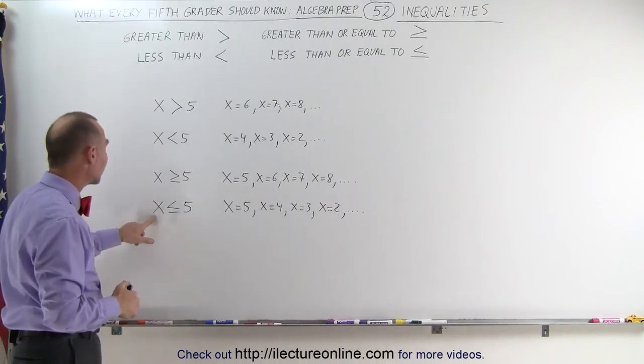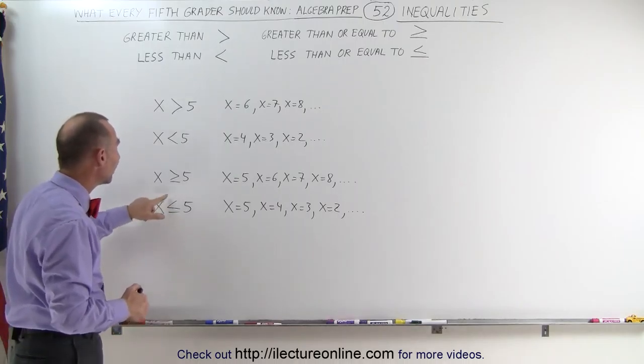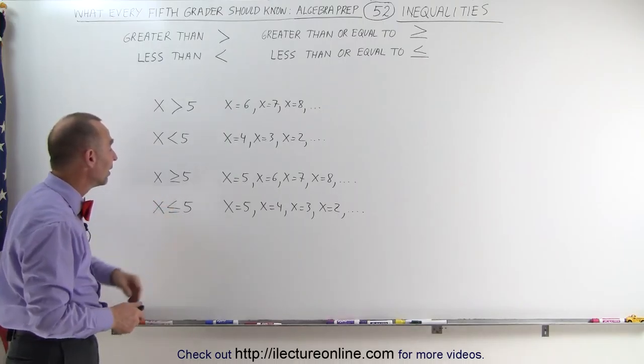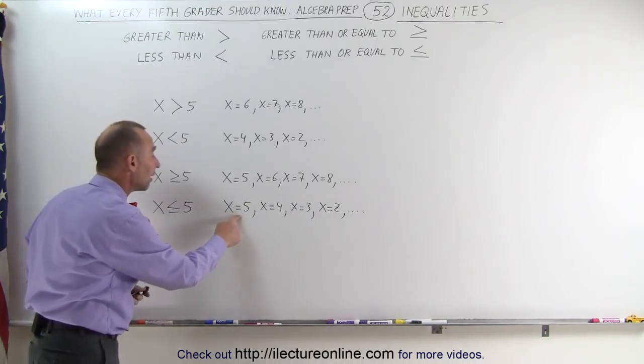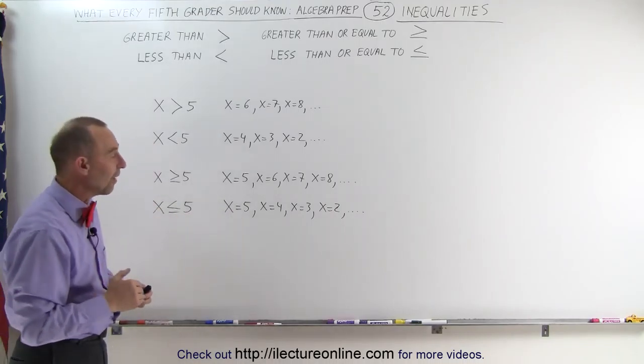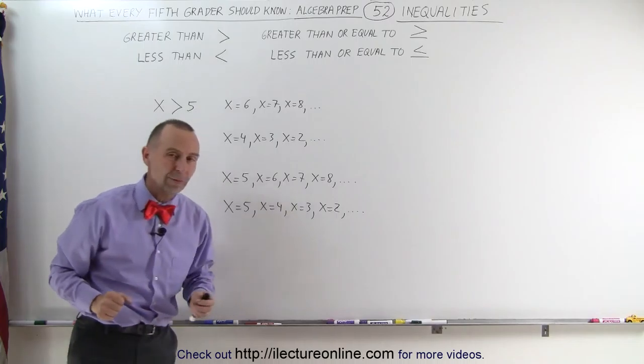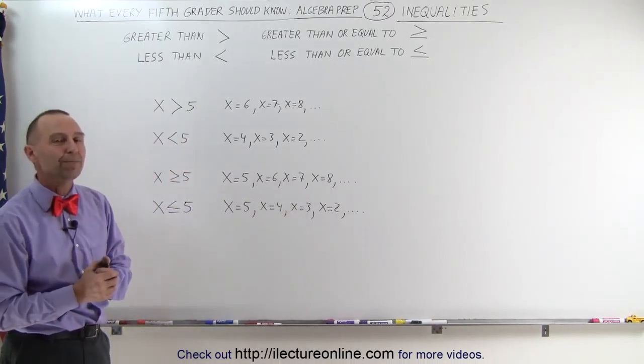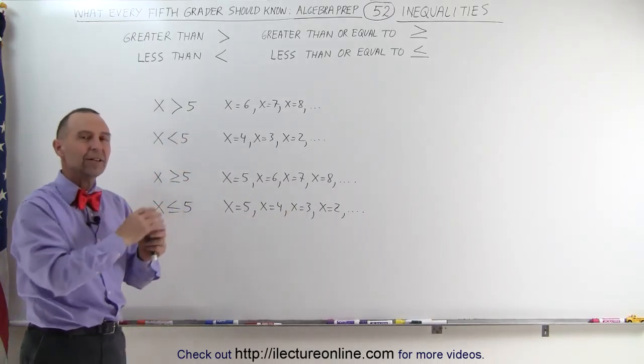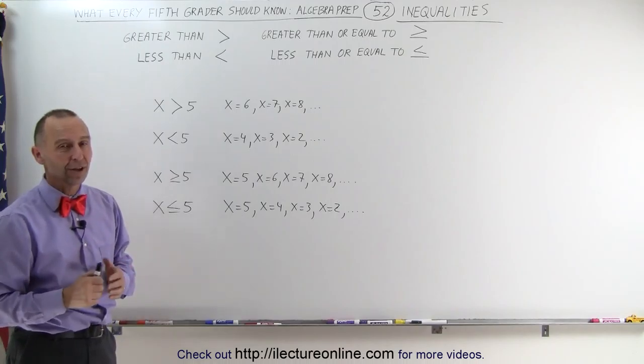If you write it like this x is smaller than or less than or equal to 5, then you can see it can be equal to 5 or number less than 5 like 4, 3, 2 and so forth. And that's what those symbols mean. Now that you have the hang of this let's go try some examples on our next video.